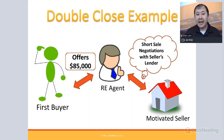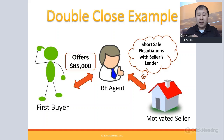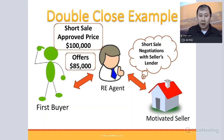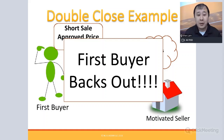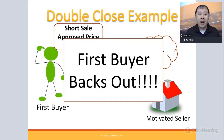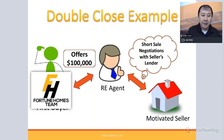A listing agent I knew had a buyer who offered $85,000. The lender approved the short sale at $100,000 — $15,000 more than the buyer would pay — so the buyer backed out. The agent called me immediately needing a cash offer. I reviewed the deal online without visiting, and our acquisition company Fortune Homes submitted an offer at $100,000 right away.